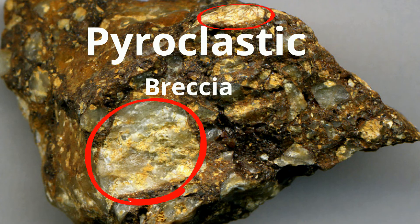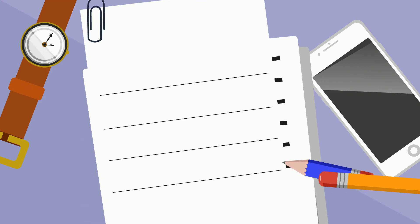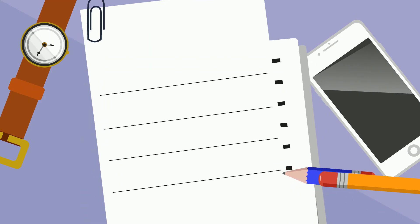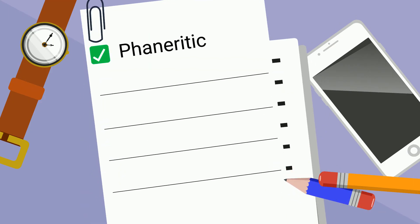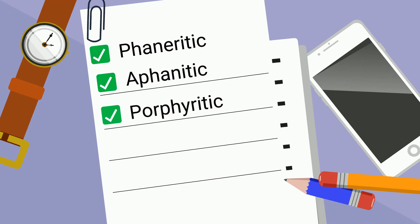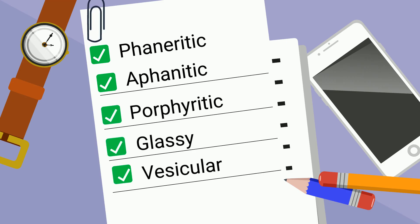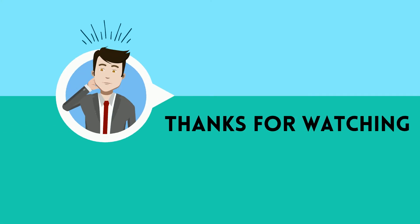So, in summary, the six igneous rock textures covered are Phaneritic, Aphanitic, Porphyritic, Glassy, Vesicular, and Pyroclastic. If you'd like to know more about igneous rocks, this playlist will help.